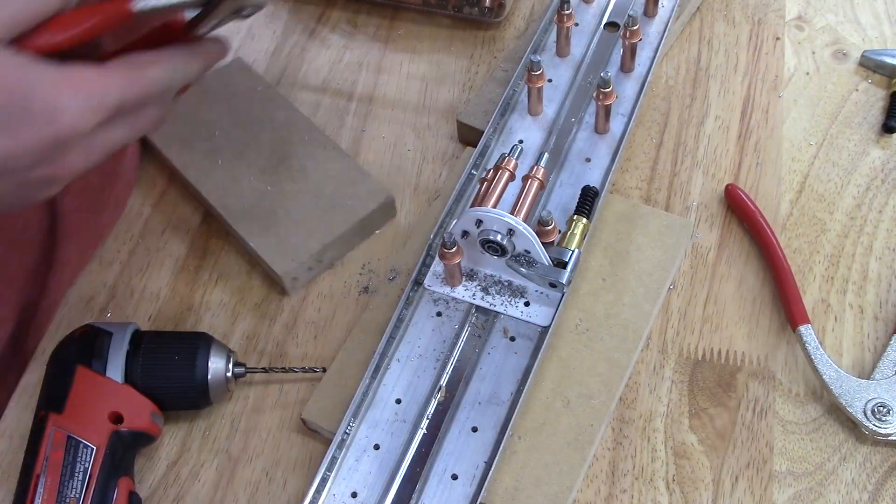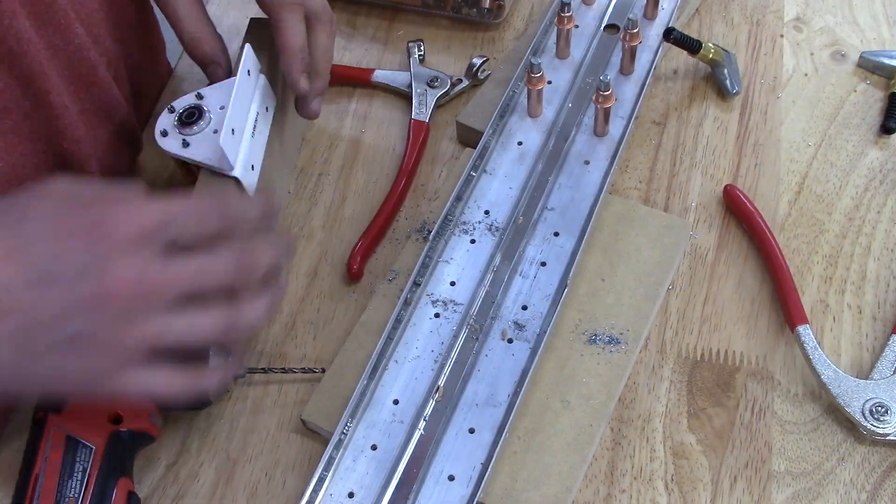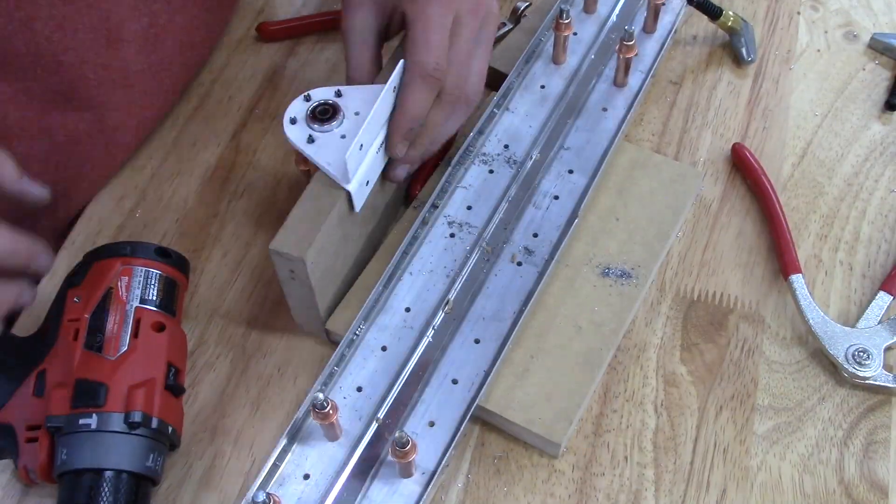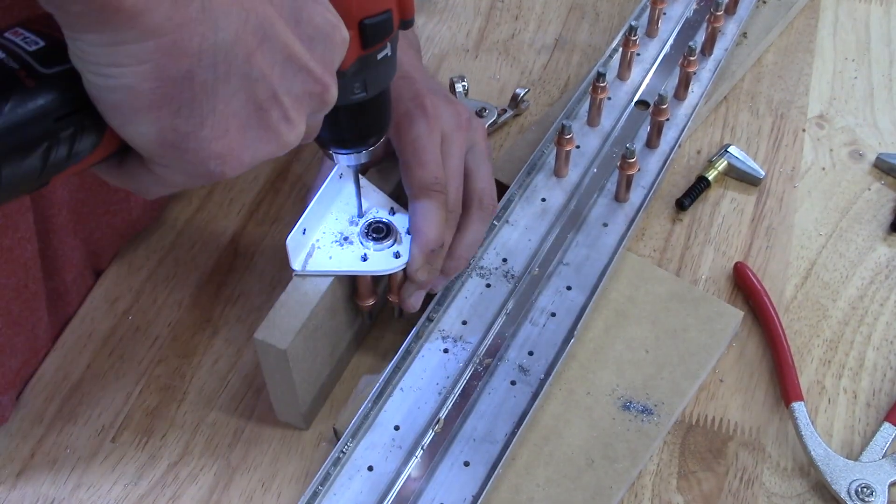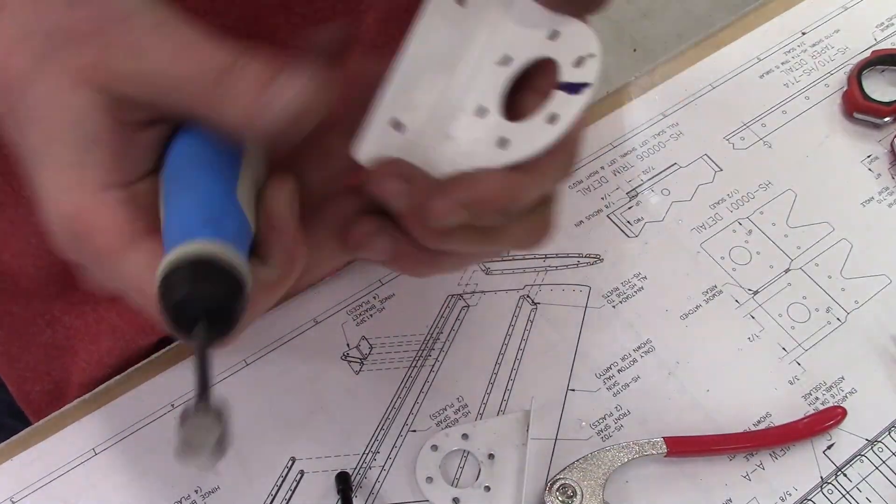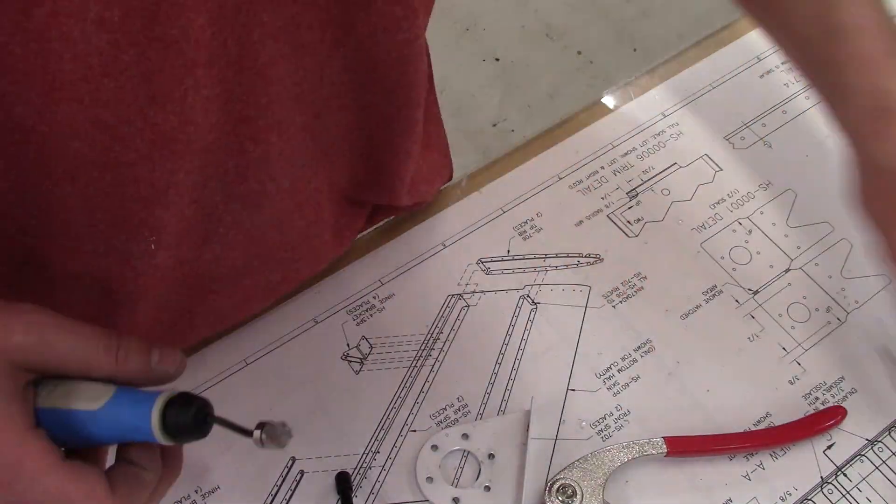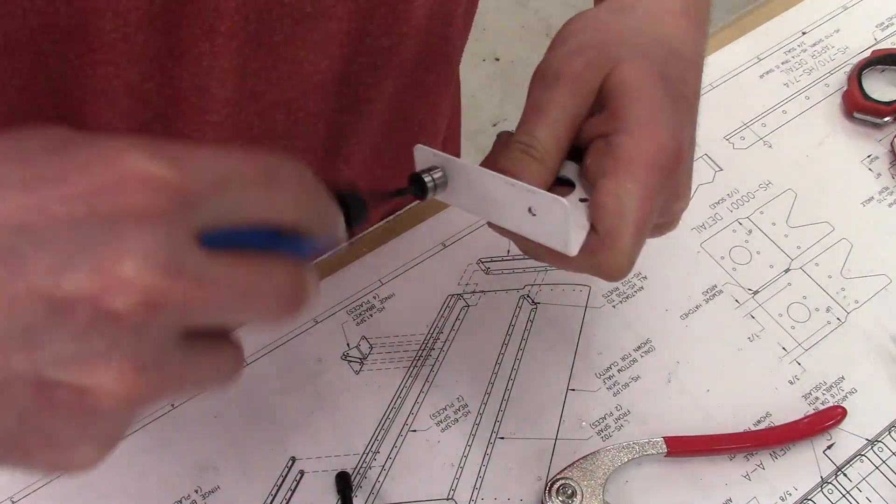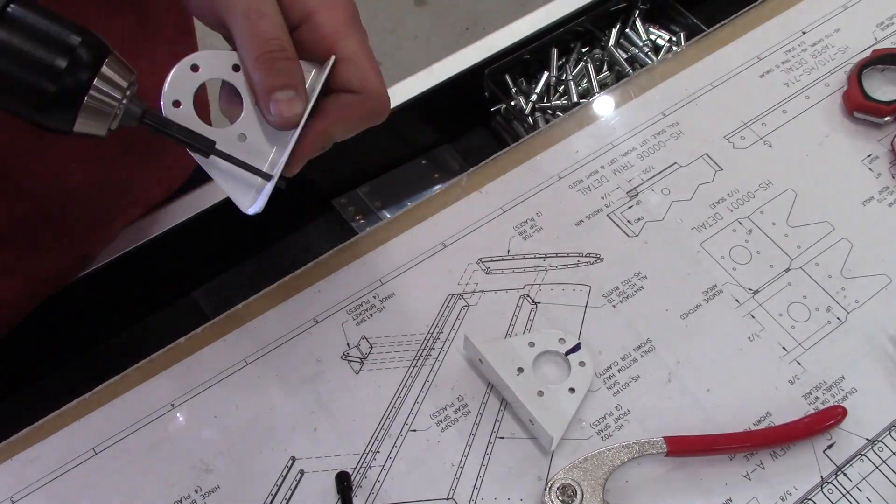I decided to use the angle drill to not have to remove any more Clicos than necessary. I didn't want the rear spar or the spar doubler moving on me while I was doing that drilling operation. It did take a bit more time since that angle drill is a bit slower but it wasn't awful.